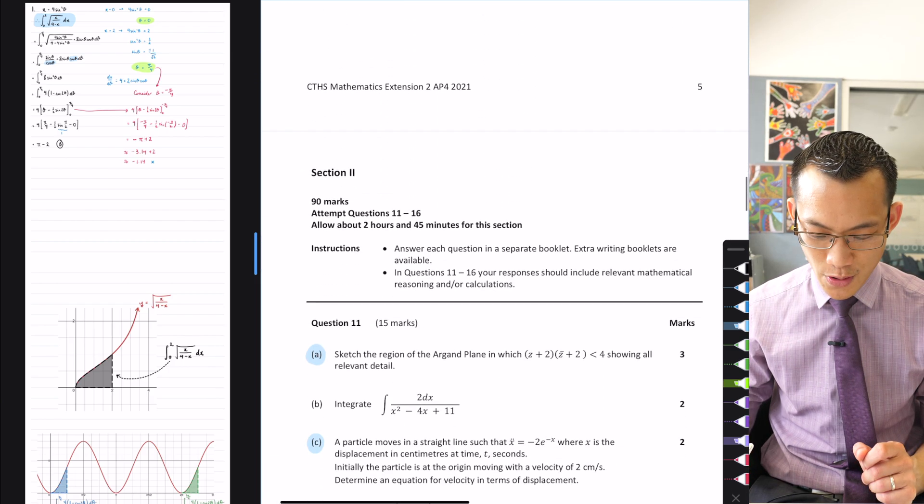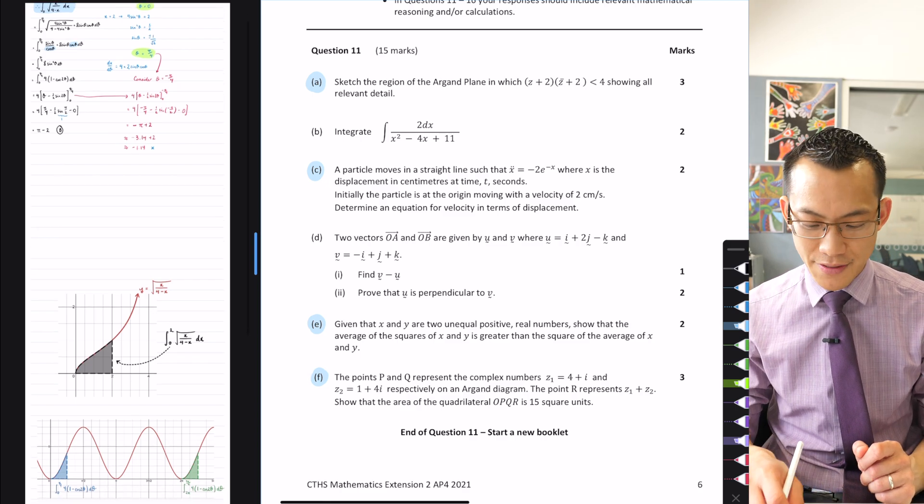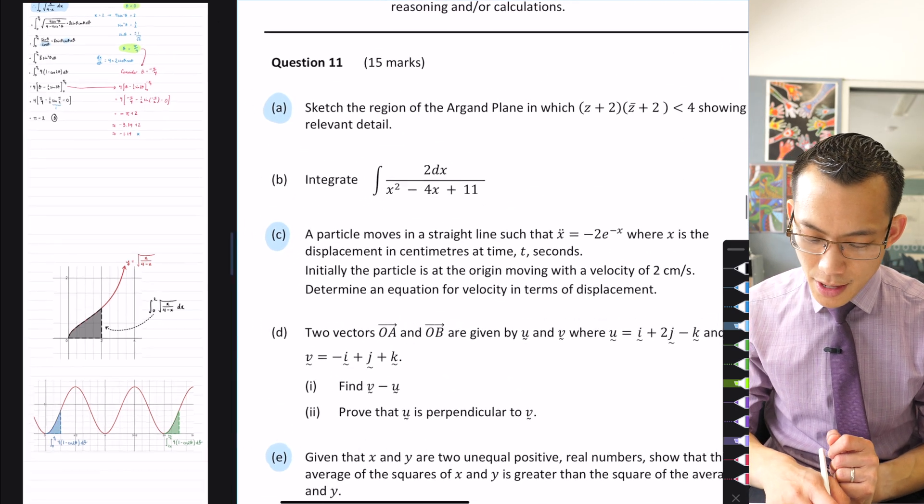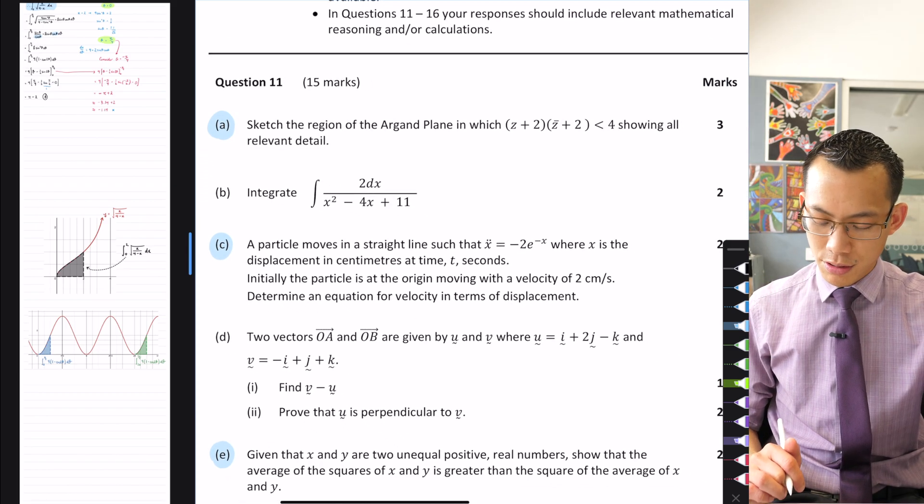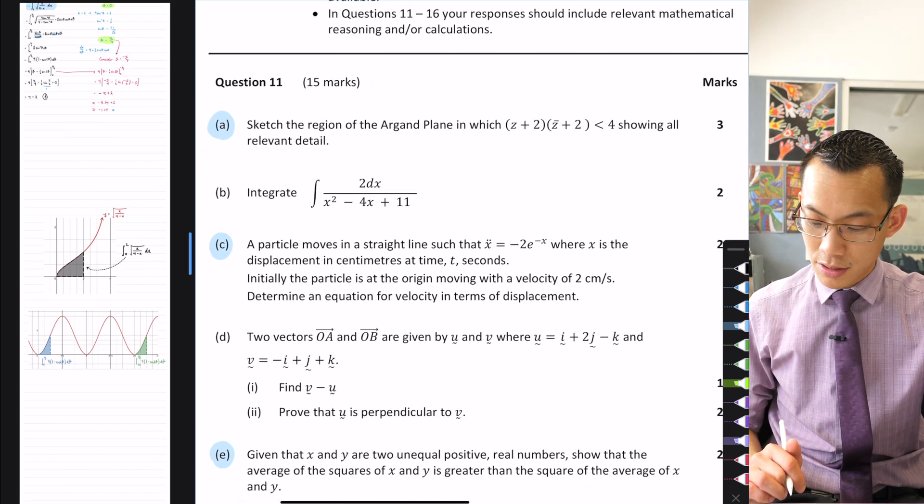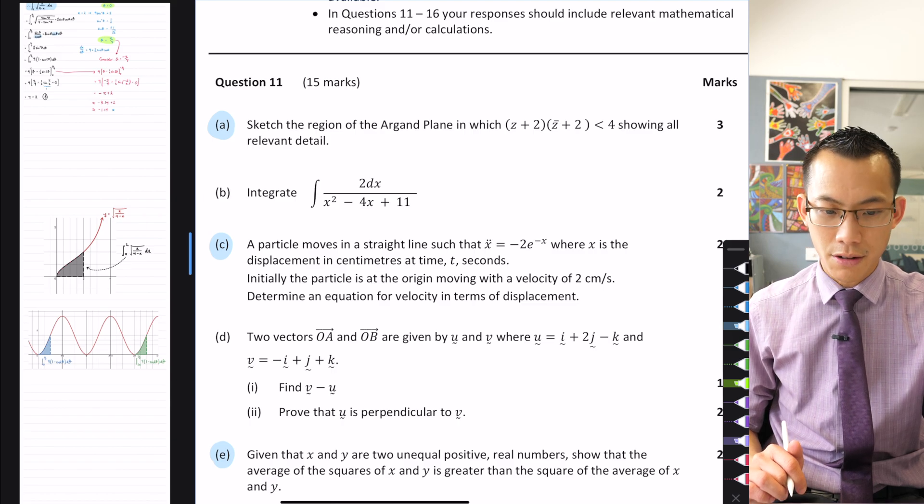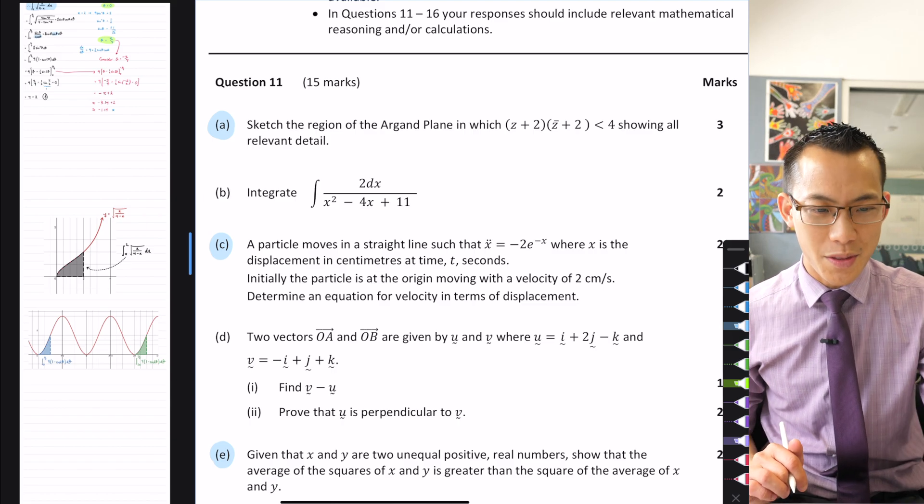Let's go a little further and see what was the next question I picked out. Okay, all the way into extended response. Let's have a look at question 11. It says, part A, sketch the region of the argand plane in which (Z plus 2)(Z bar plus 2) is less than 4, showing all relevant detail.